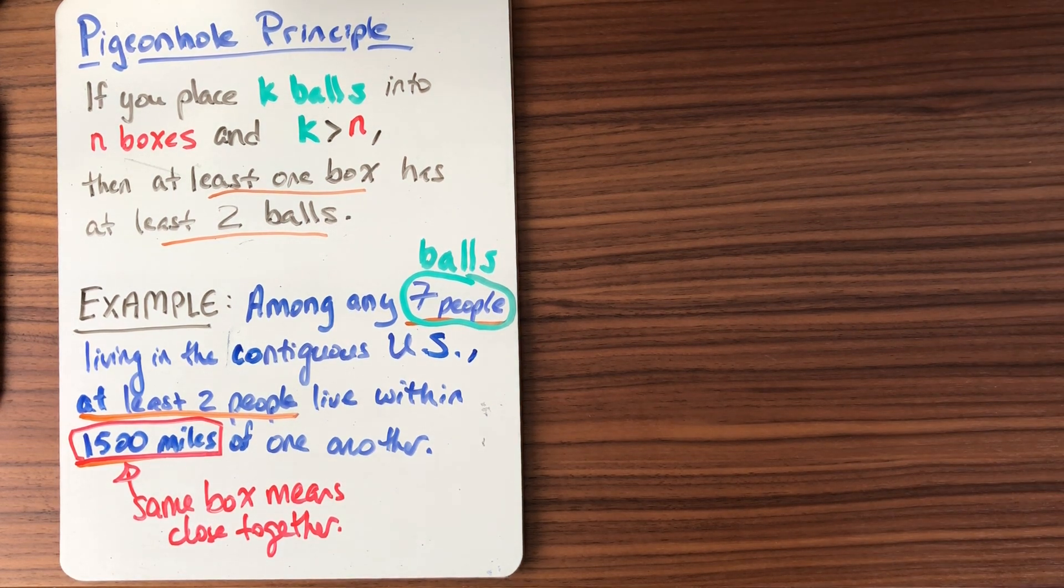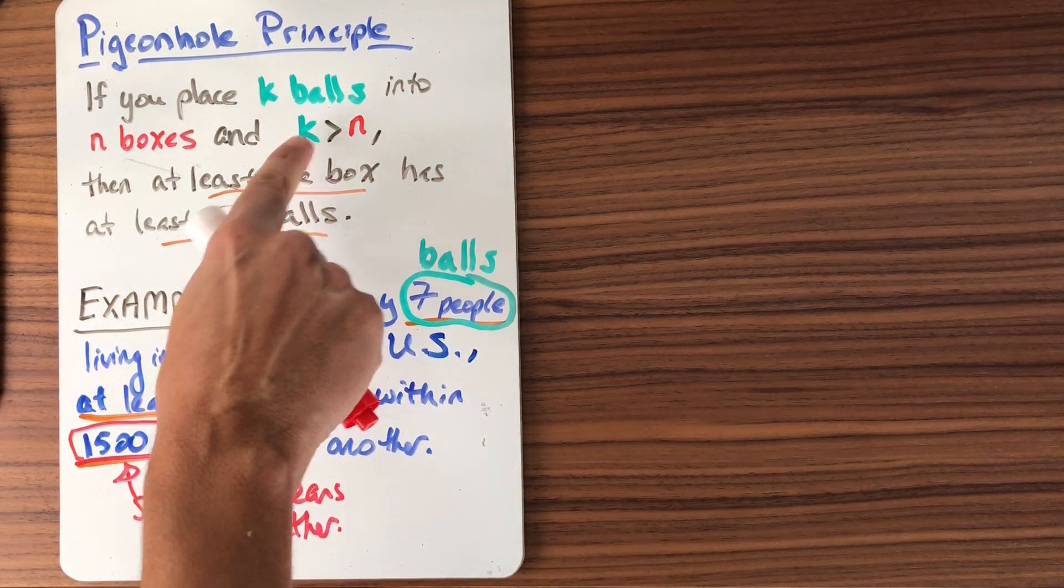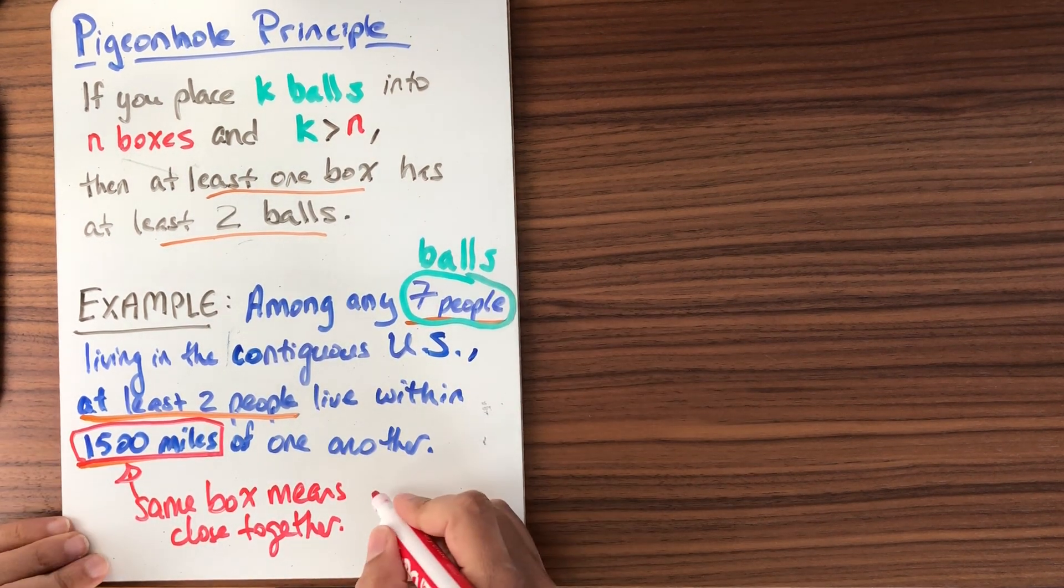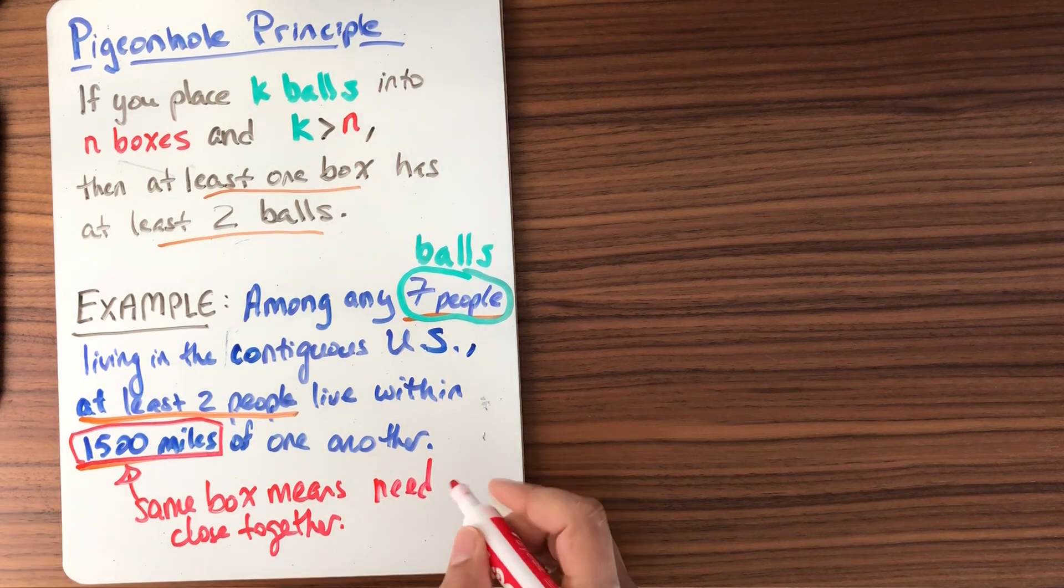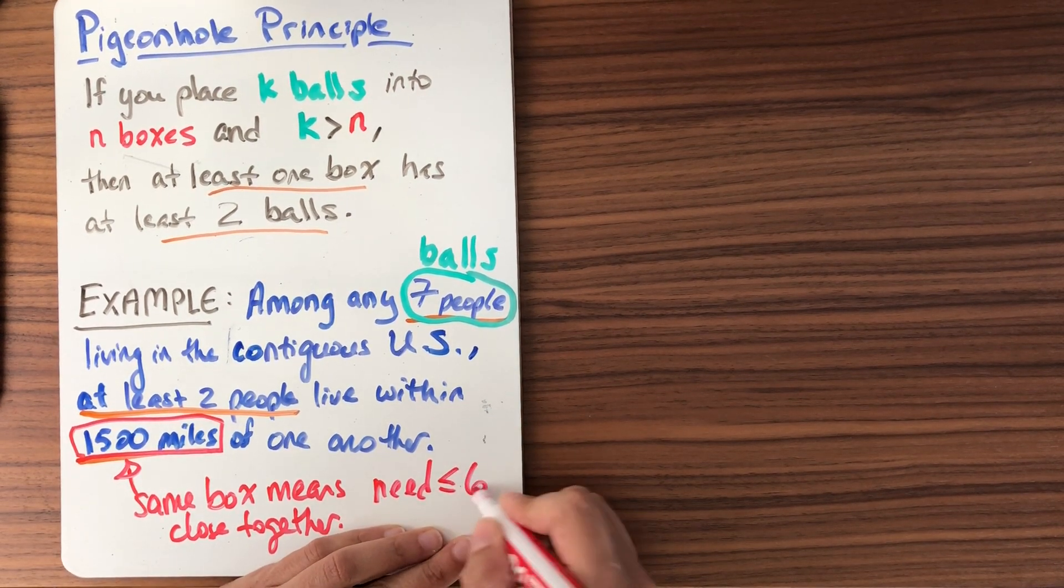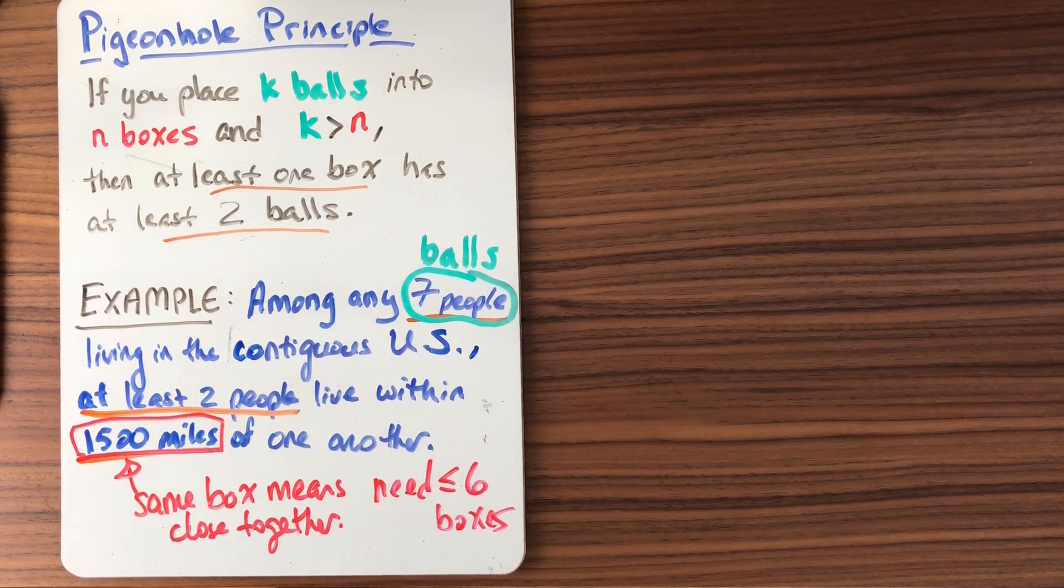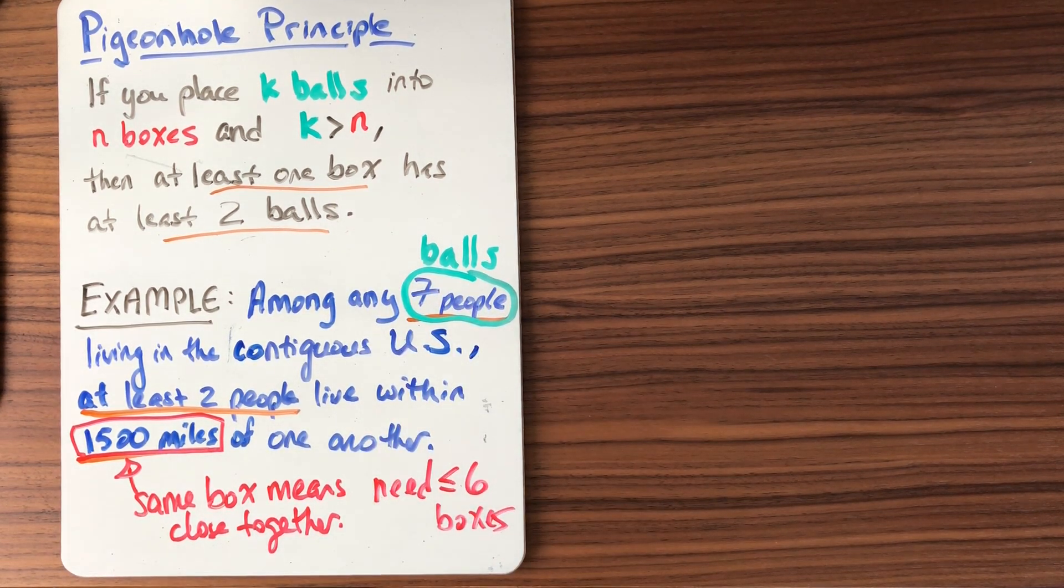Let's look at the pigeonhole principle. The pigeonhole principle says I have to have more balls than I have boxes. I know how many balls I have, seven. So I need at most six boxes. That way, when I choose seven people, I know two of them end up in the same box. So that's fantastic. I've sort of decomposed my problem like this and I've gotten it started.